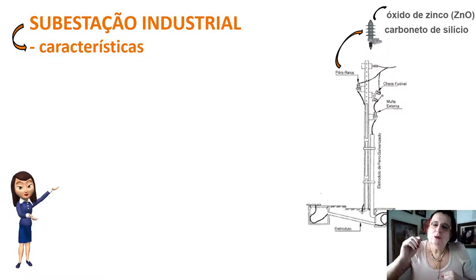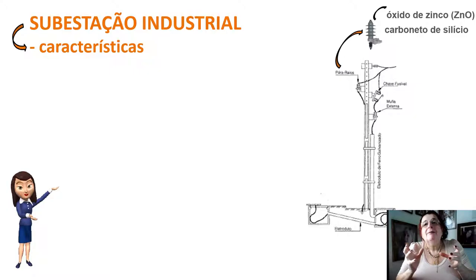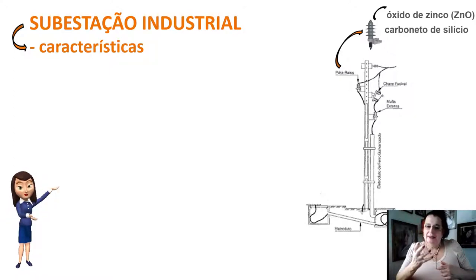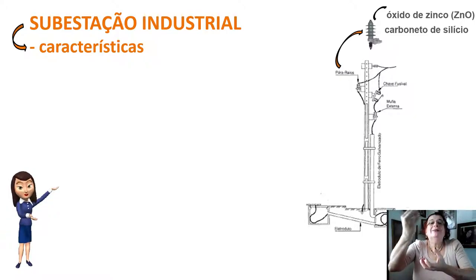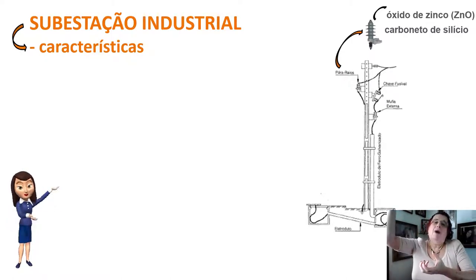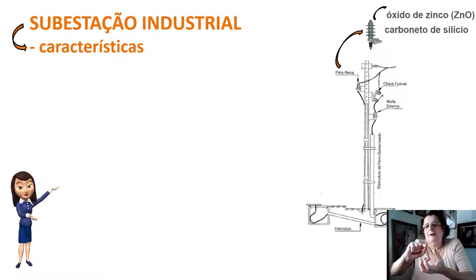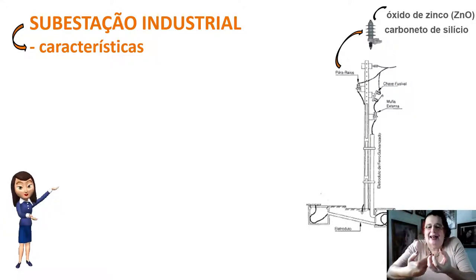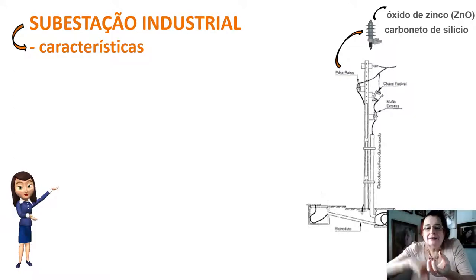Quando temos uma linha de transmissão elétrica de alta tensão, ela recebe raios em ambiente atmosférico propício. O para-raio, ao receber o raio de alta voltagem, drena essa alta voltagem para a terra, pois está ligado a uma barra aterrada. O raio cai na rede de distribuição de 13 mil volts, gera elevada tensão, e o para-raio percebe que a tensão está muito acima e drena essa tensão ao terra.